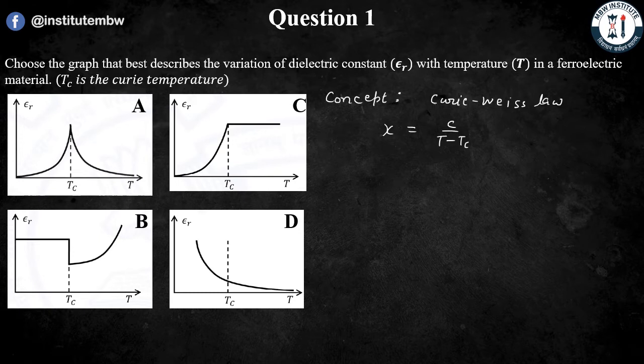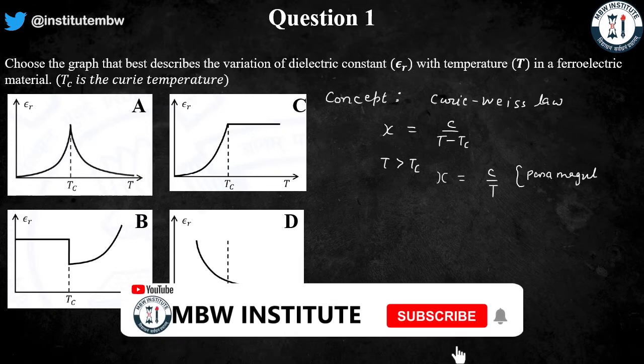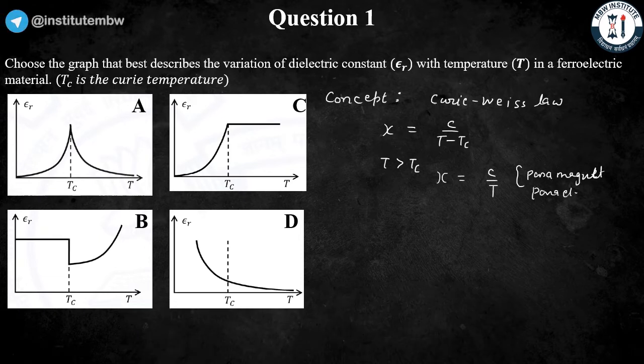For T greater than TC, the susceptibility becomes C over T, and we call them paramaterials. In case of magnetic material, we call it paramagnetic. In case of electric material, we call it paraelectric.